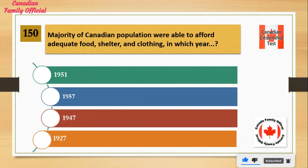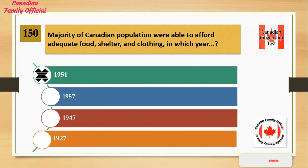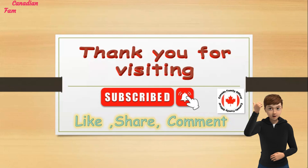And the answer is to work hard. In which year was the majority of the Canadian population able to afford adequate food, shelter, and clothing? Number 1: 1951. Number 2: 1957. Number 3: 1947. Number 4: 1927. And the answer is 1951.